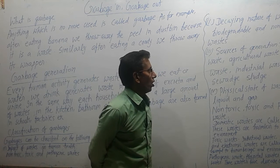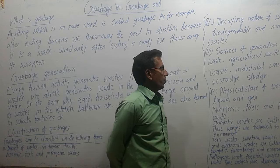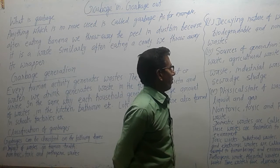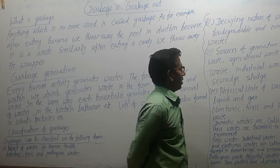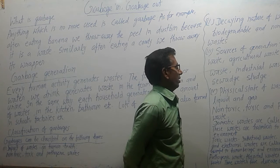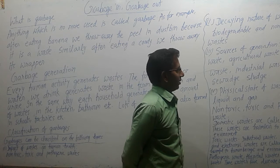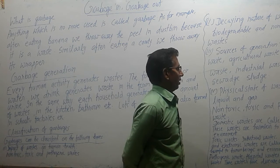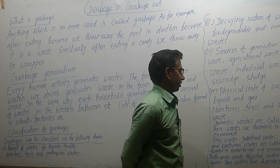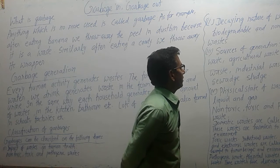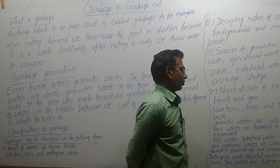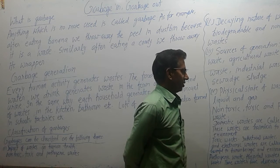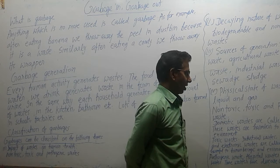The third basis is sources of generation. On this basis, there are five types of garbage or waste: domestic waste, agriculture waste, community waste, industrial waste, and sewage sludge. The fourth basis is the physical state of waste. On this basis, there are three types of waste: solid, liquid, and gas.